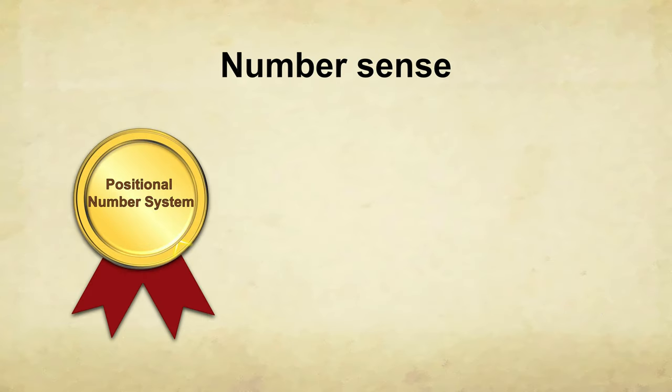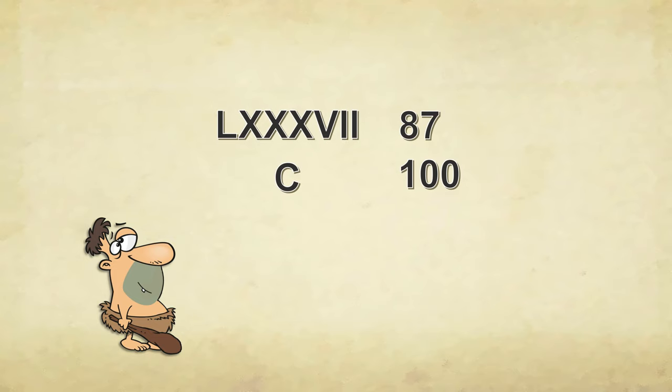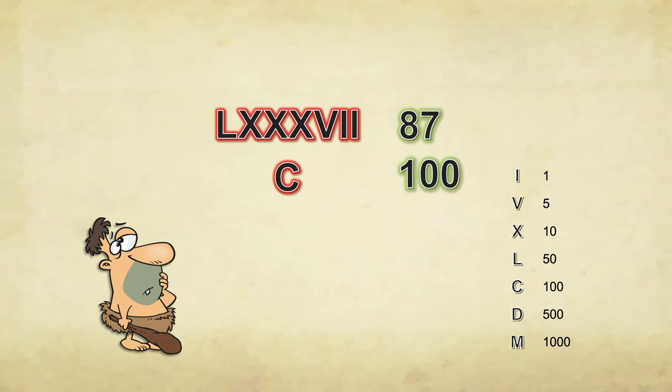In the next section, we are going to talk about the great contributions made by positional number system in developing our number sense. Specifically, we are going to see why Arabic numerals seem more tight and neat as compared to Romans. Is it just because we are used to one but not the other? Or, there are some fundamental differences between the two in building our number sense?